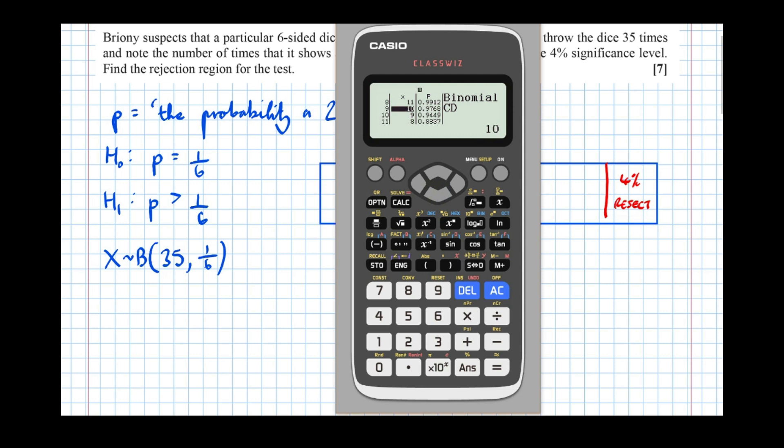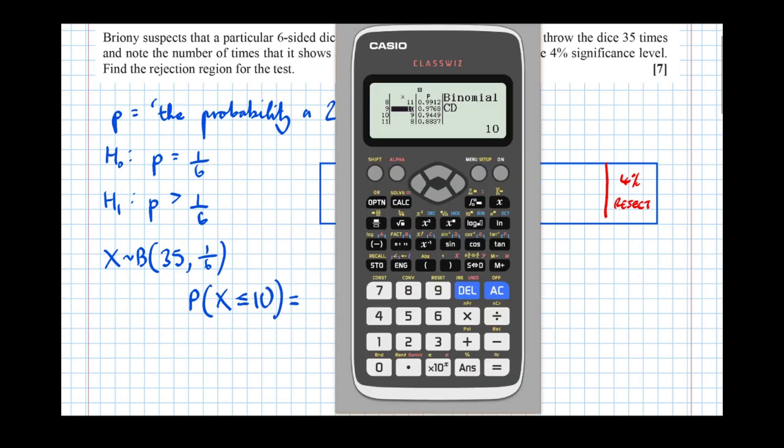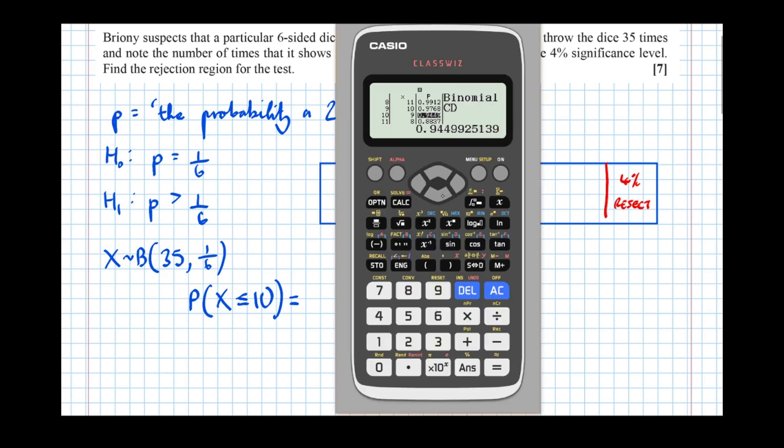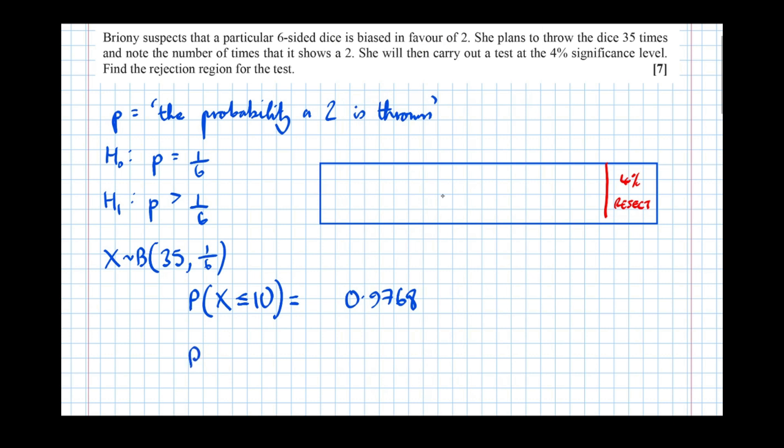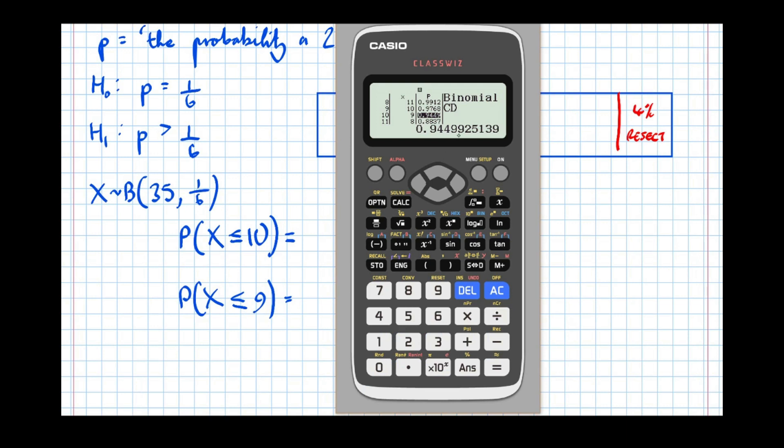So what I'm going to write is the probability that X is less than or equal to 10 is, let's hover over it and make sure we're rounded correctly, 0.9768.